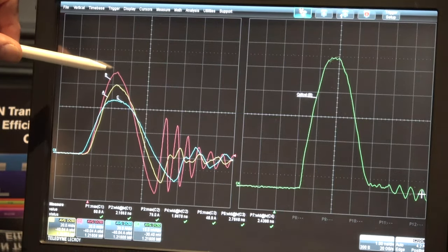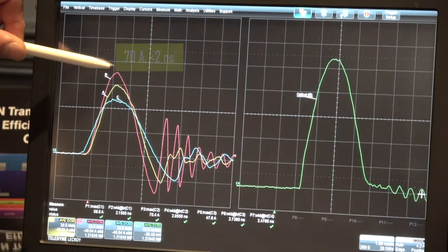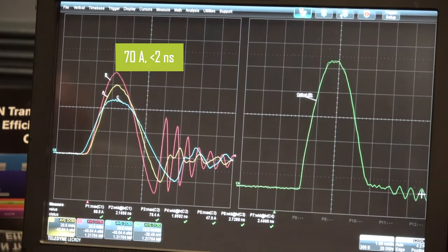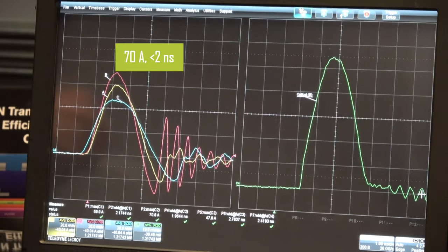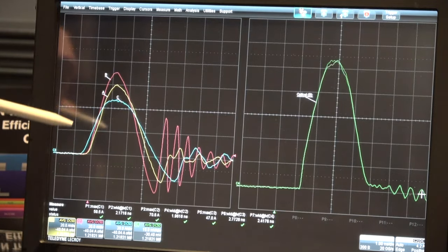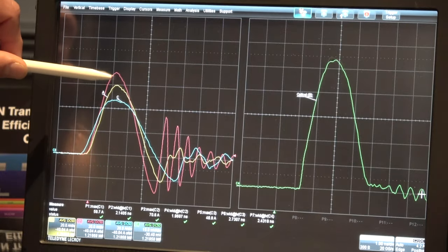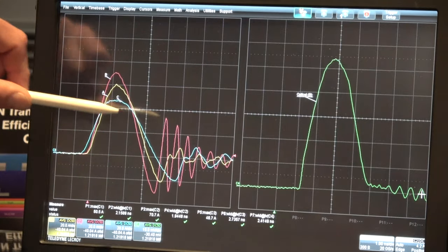If you take a look at the highest power laser here, it's actually reaching a peak current of over 70 amps with a half-height pulse width of less than two nanoseconds. And if you take a look at the other lasers, you'll see the current is a little lower and they're a little bit wider.